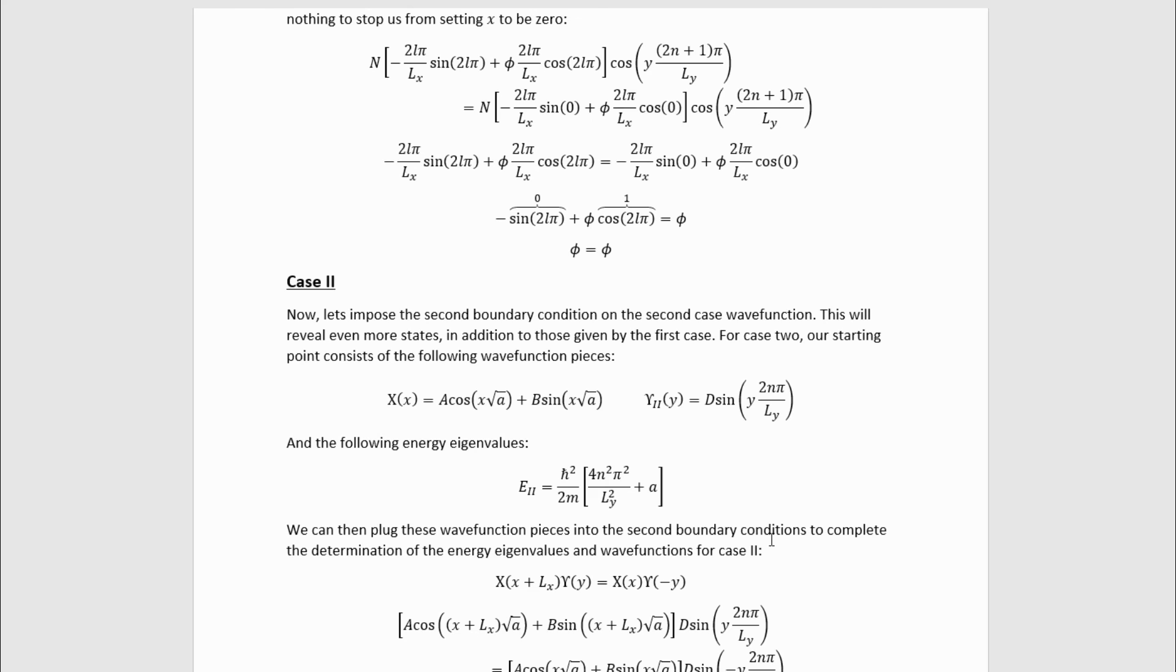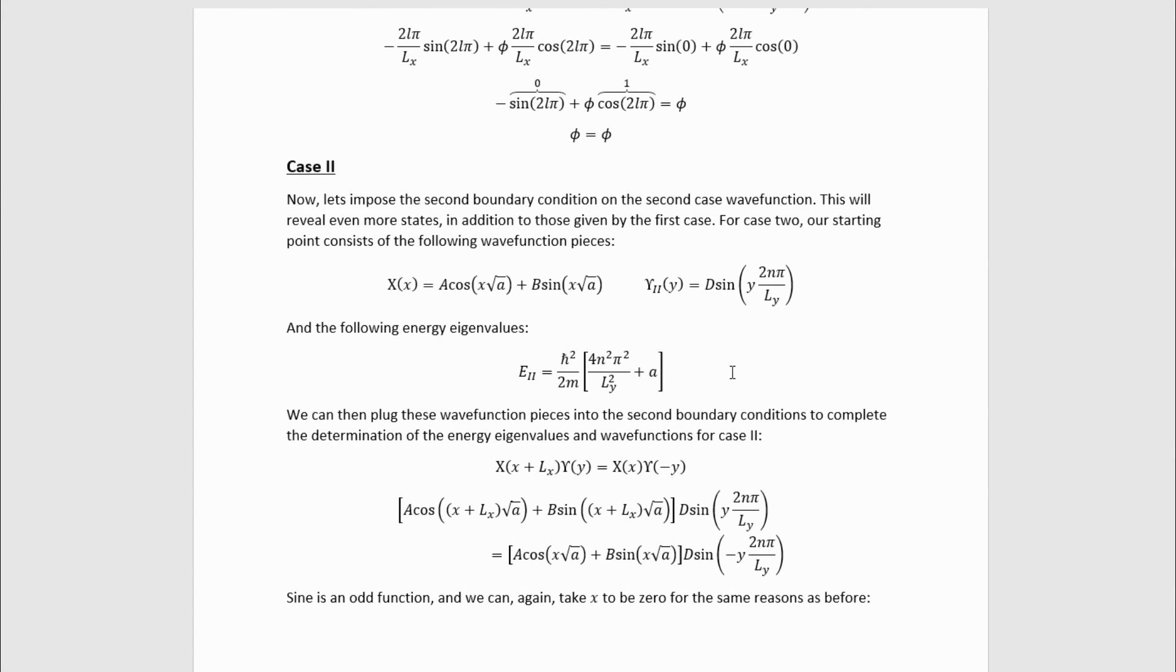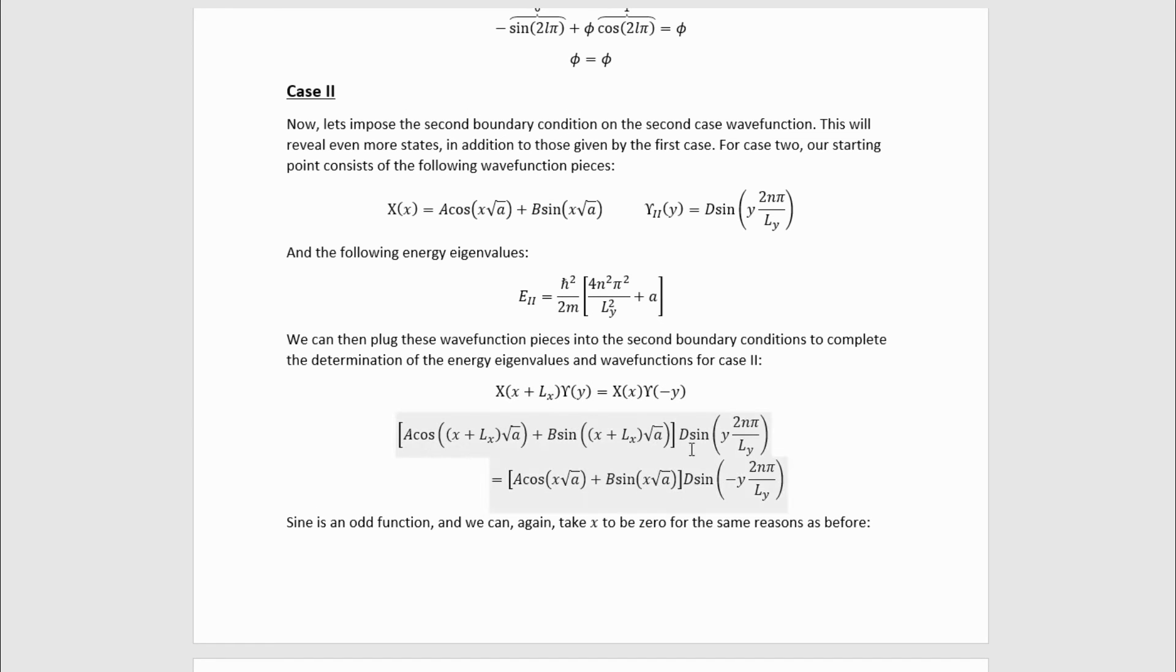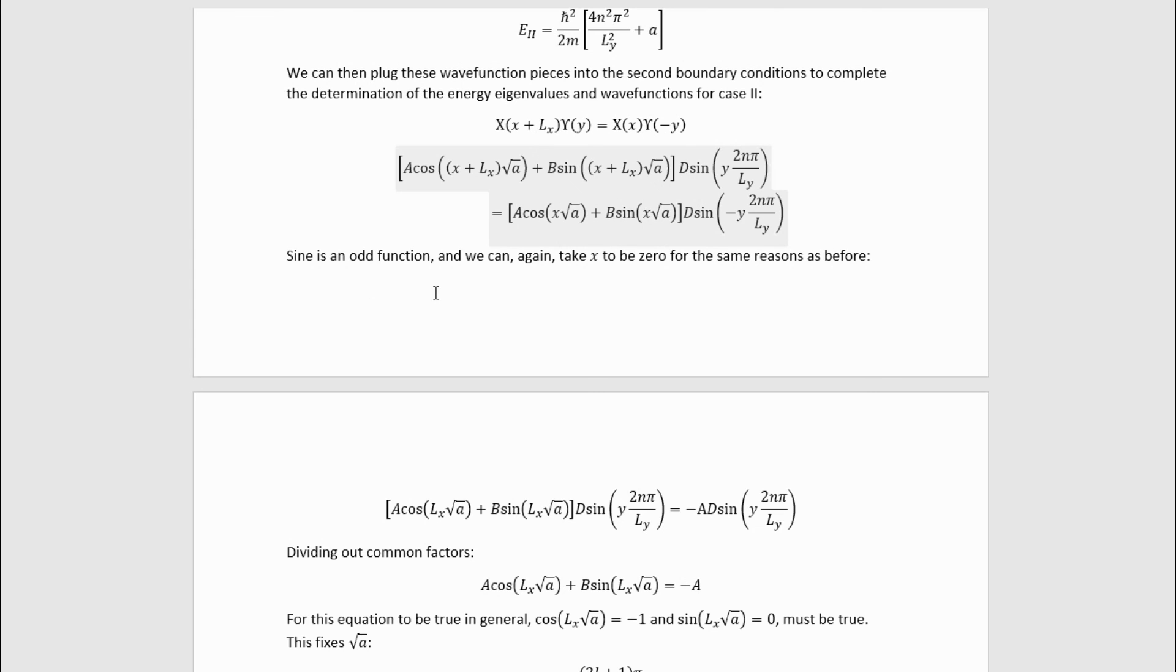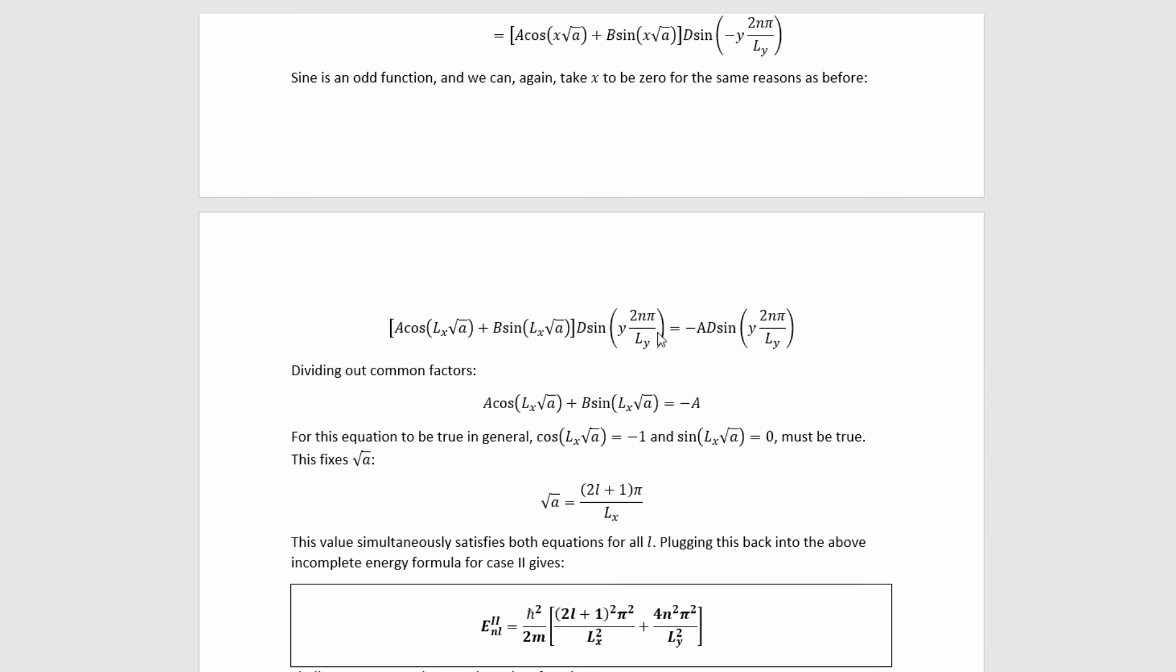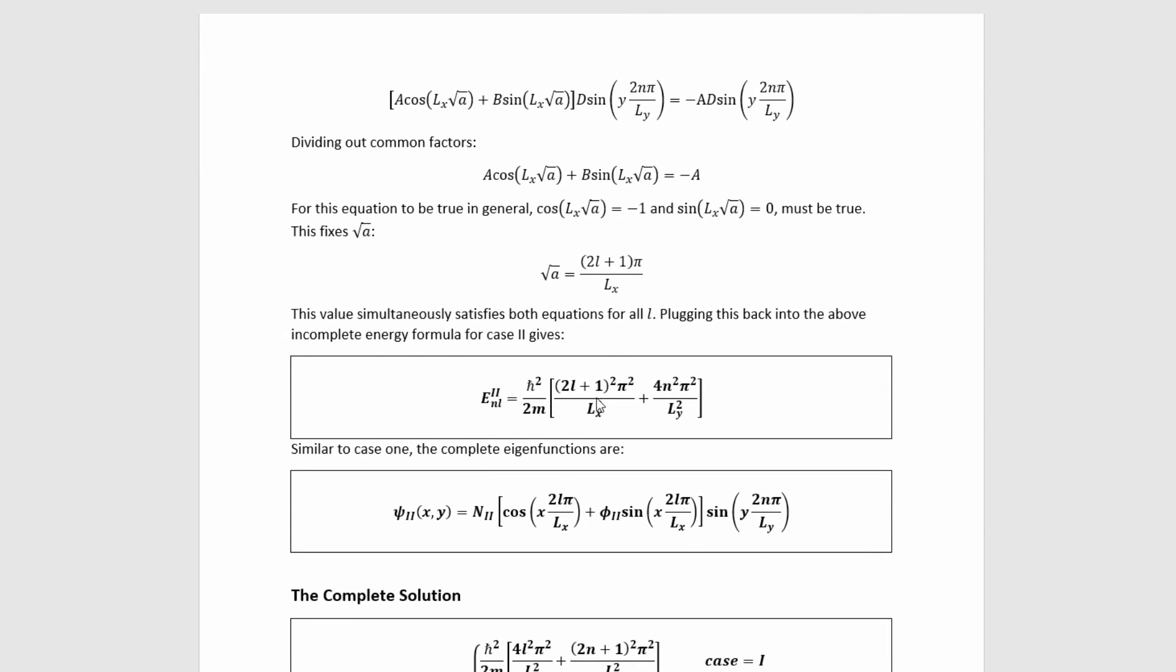Now let's impose this second boundary condition on the second case wave function. Here we're working with these two wave function pieces and these incompletely specified energy eigenvalues. This is the same boundary condition we were working with above. If we plug in the wave function pieces, we get this. Then we can remember that sine is an odd function here and take x to be equal to zero. That gets us to this. If we divide out common factors, we get from here to here. Now this equation is only true if we have this value for cosine and this value for sine. Now these are only simultaneously always the case if we select this value for root a. Doing that causes both of these equations to be satisfied simultaneously for all integers l.